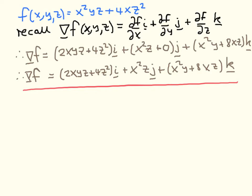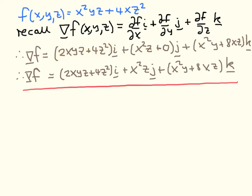The next exercise is to calculate the gradient of this scalar field, which is the sum of two terms but otherwise quite similar to the previous exercise. Recalling the definition of the gradient, in the X direction we differentiate with respect to X: we get a factor of 2X multiplied by YZ, plus differentiating the second term with respect to X leaves us with 4Z squared. We need brackets around this because all of it is multiplied by the unit vector I.